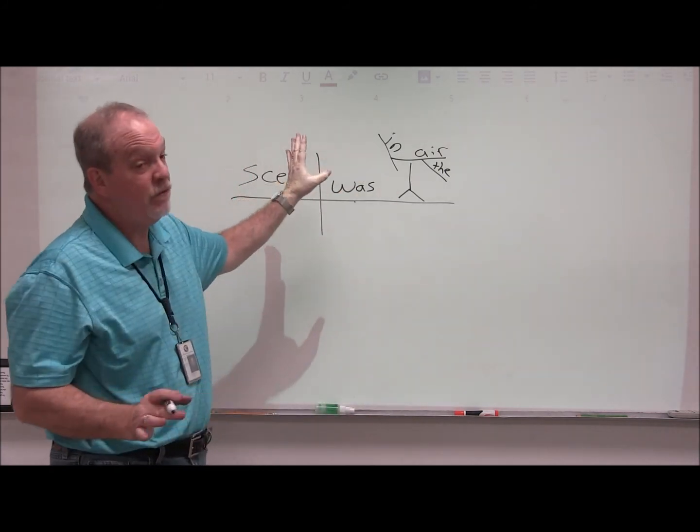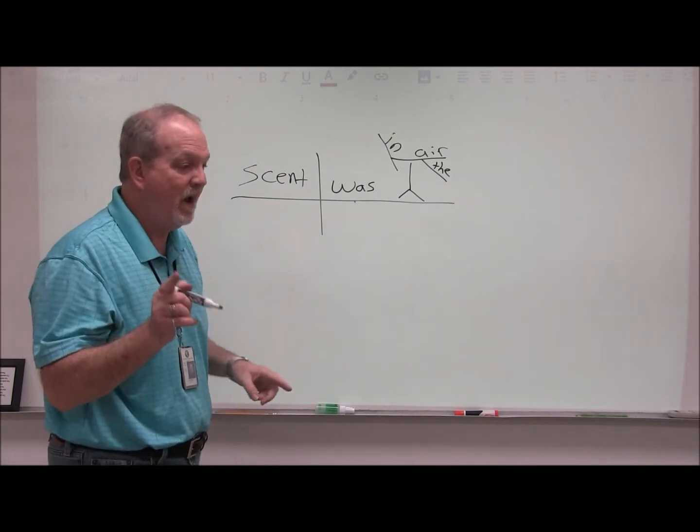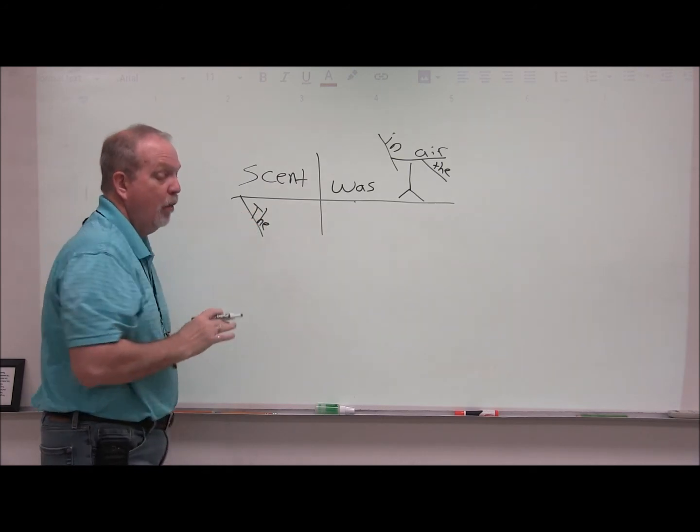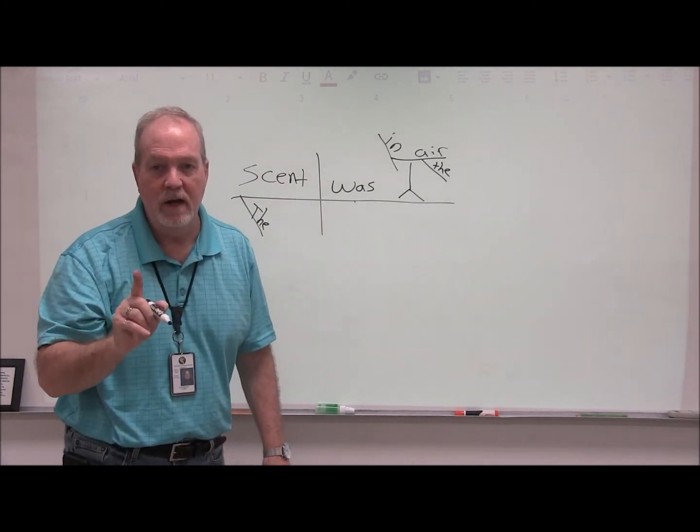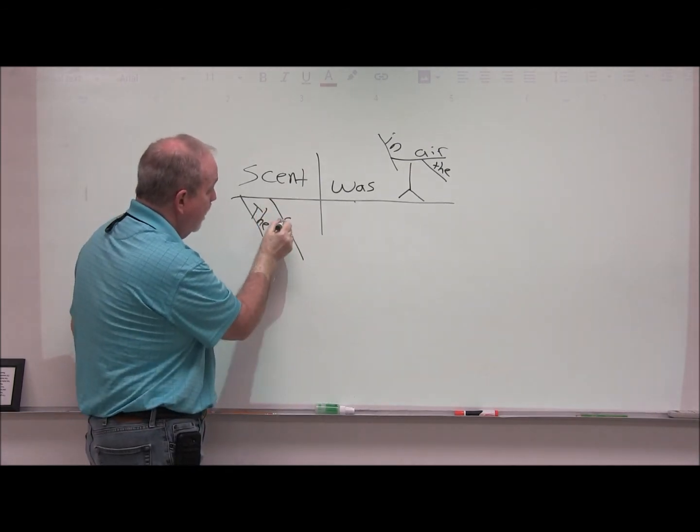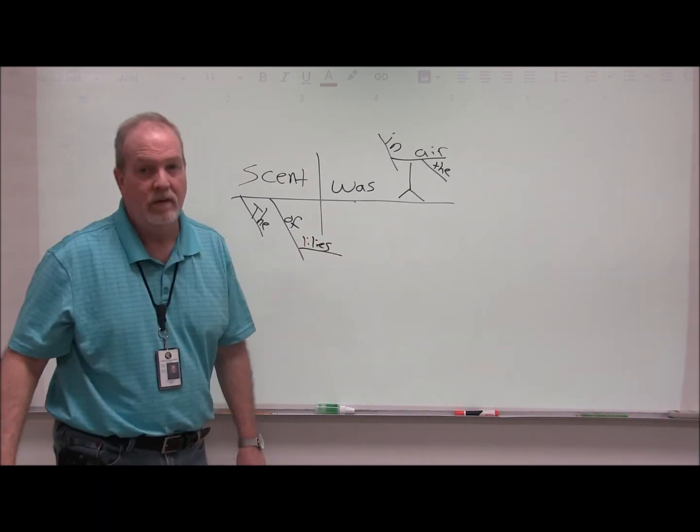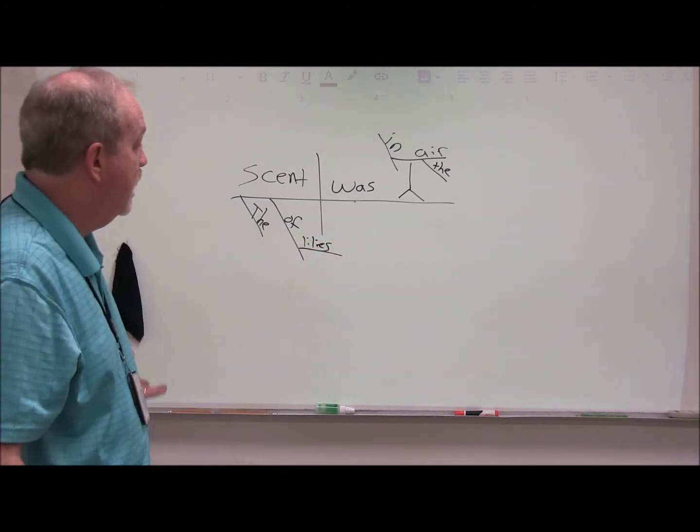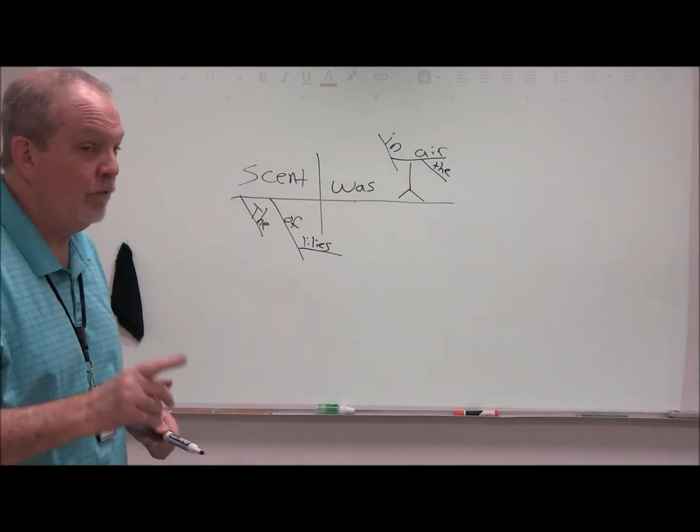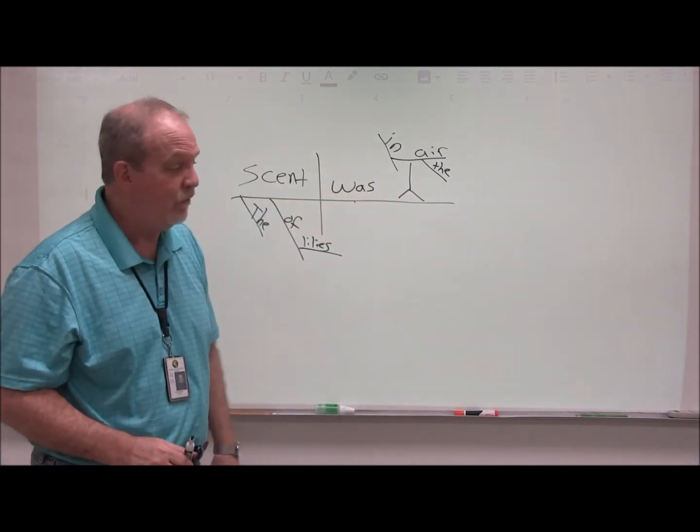Now, we haven't finished yet because we still have other words in the sentence. We've got to go back to the beginning. What kind of scent? The scent. The scent. What other kind of scent? Of lilies. Prepositional phrase. Of lilies. That's it. That's your new thing. You've learned about structuring prepositional phrases. You've learned a new structure with a pedestal.